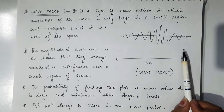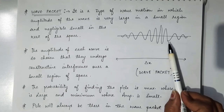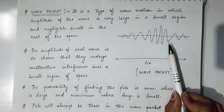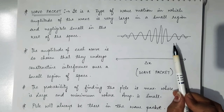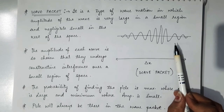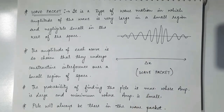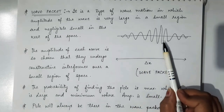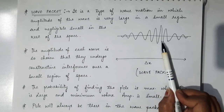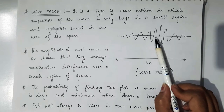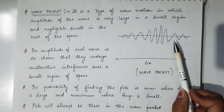We cannot specify the position of the particle precisely, so we will discuss about its probability. That is why in quantum mechanics, we discuss about the probability of finding the particle. The particle always lies inside this wave packet, but at some points its probability will be maximum and at other points its probability will be minimum.